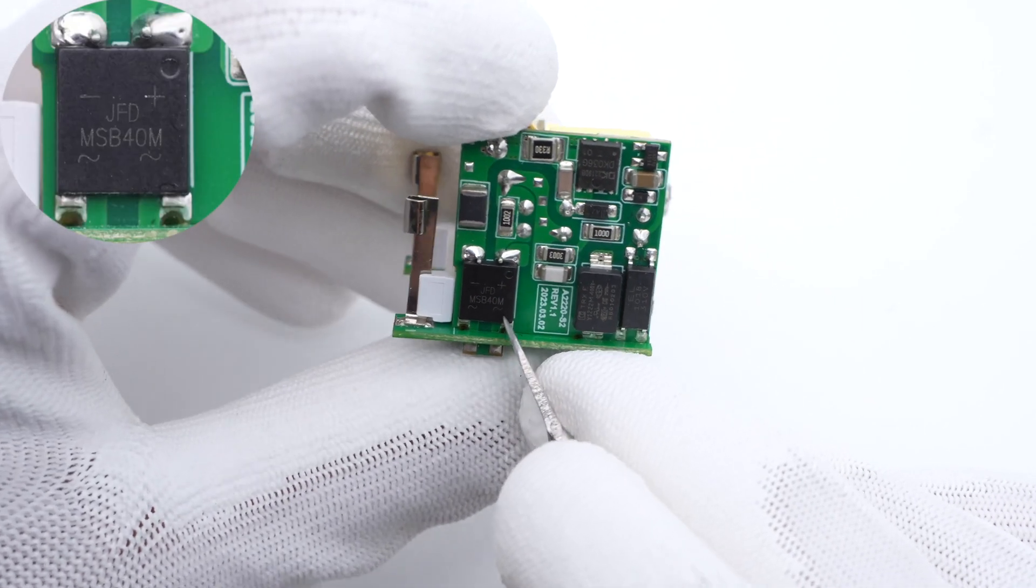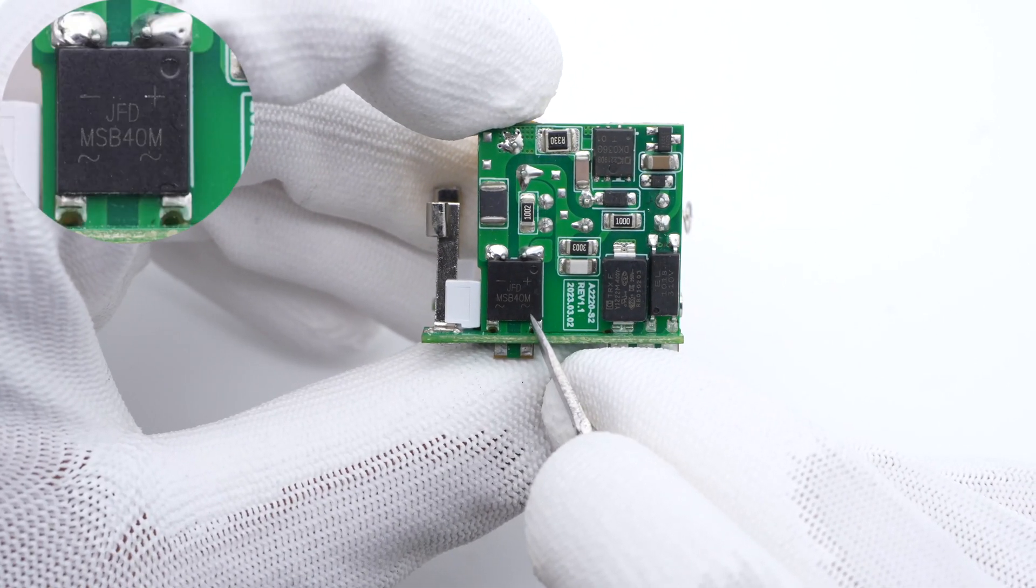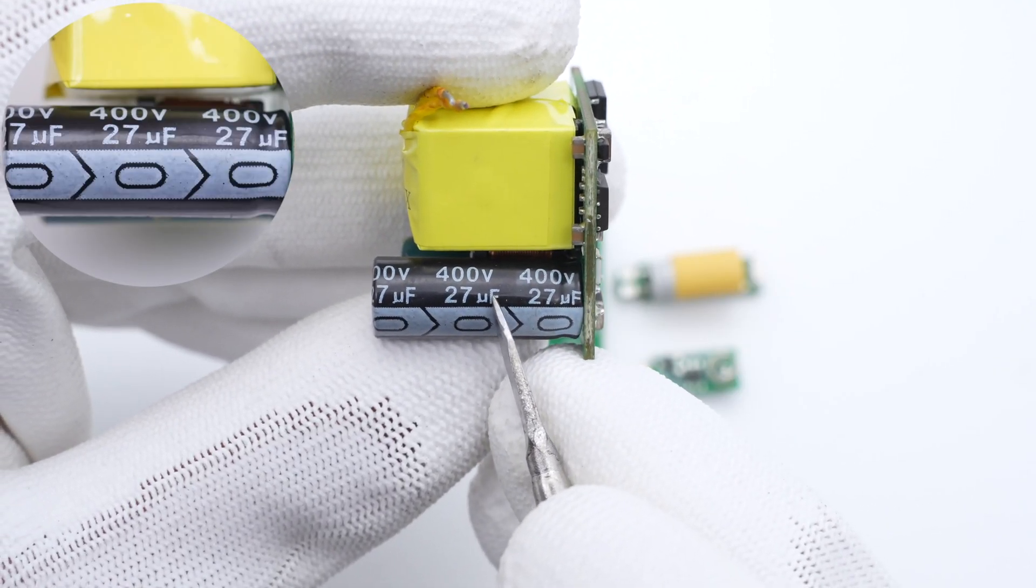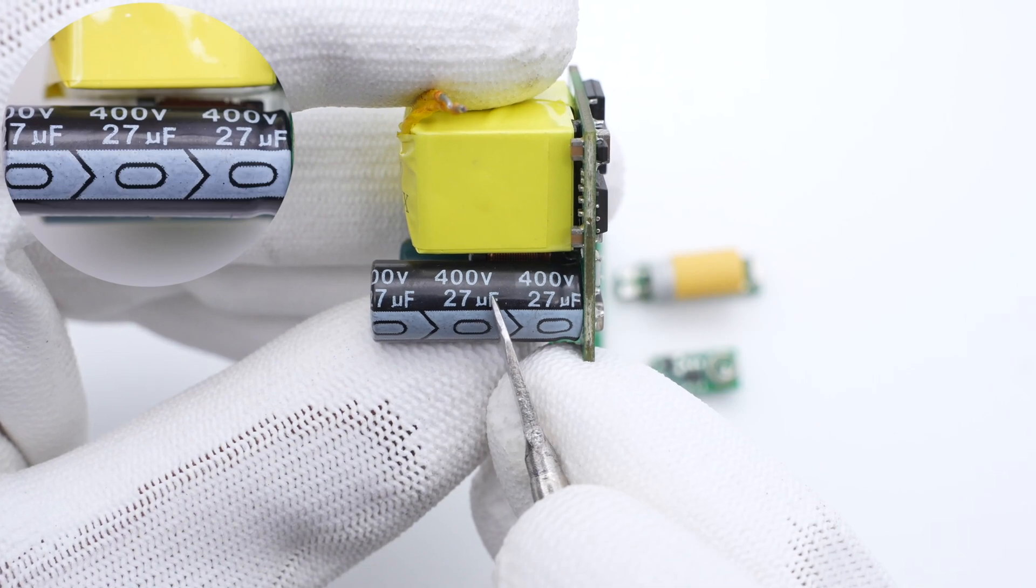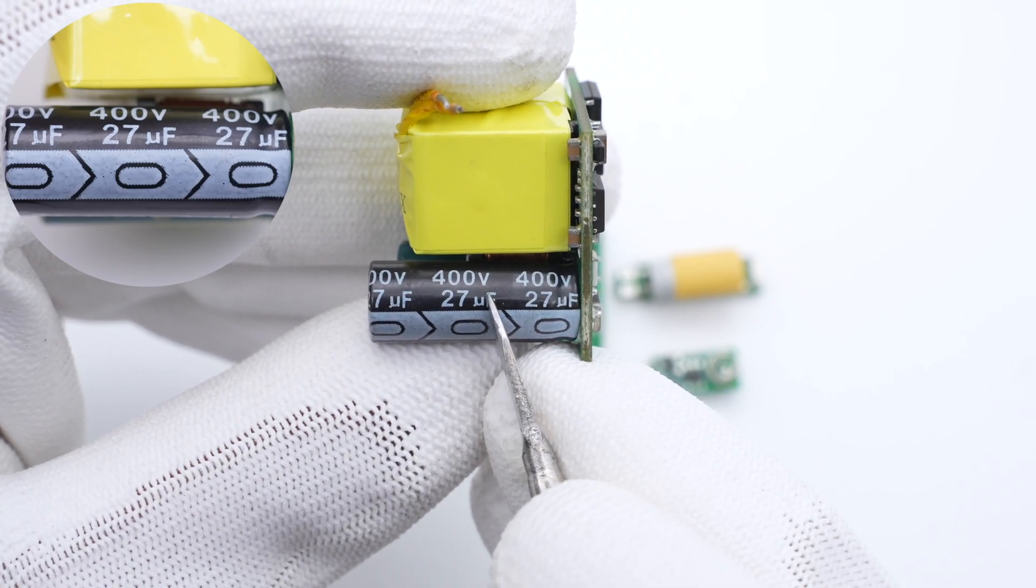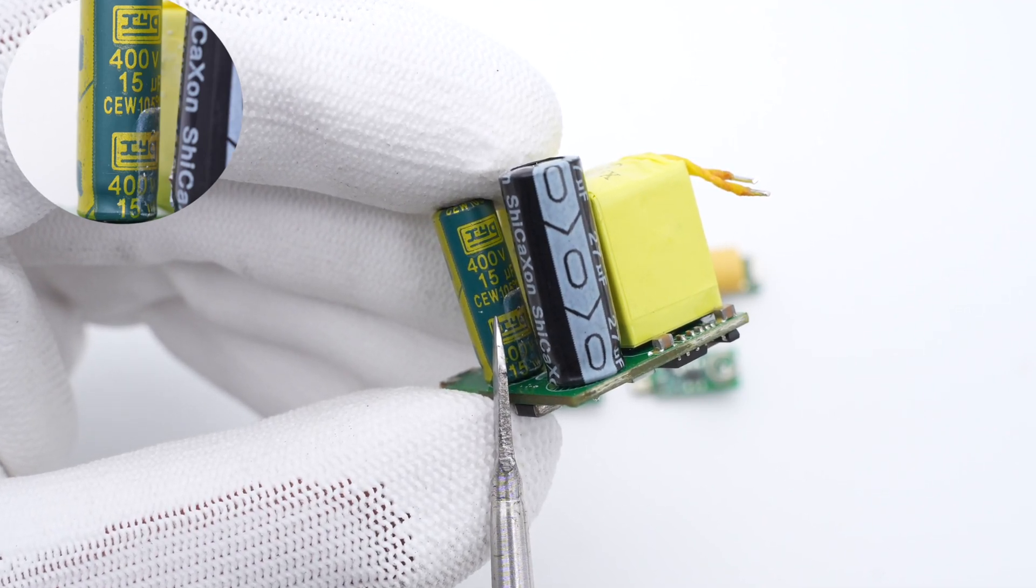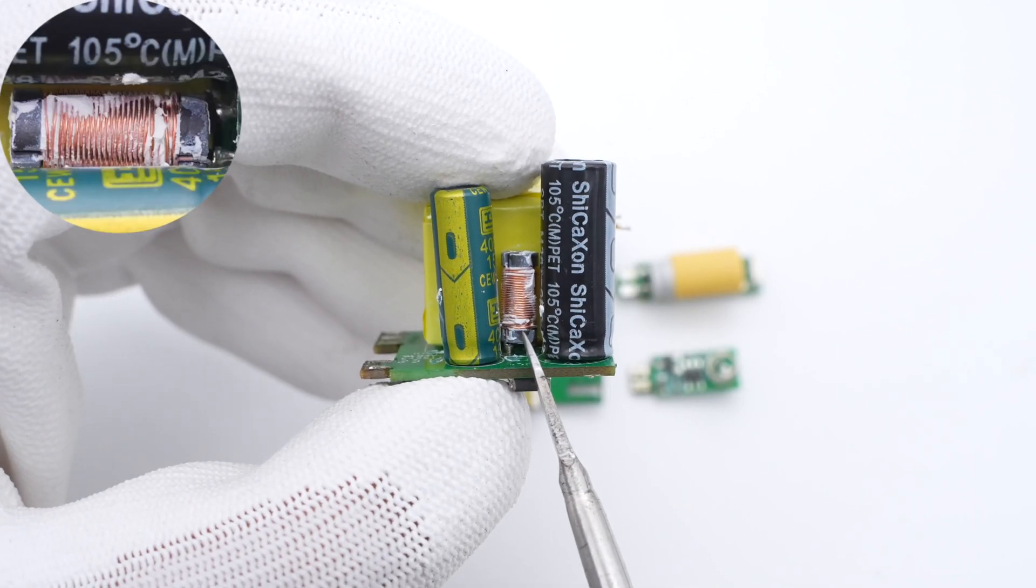This bridge rectifier is on another PCB, 4A, 1000V. The electrolytic capacitor for input filtering is next to the transformer, 400V, 27μF. And this smaller one is 400V, 15μF. A differential mode choke is between them.